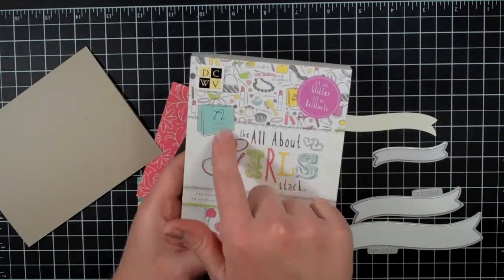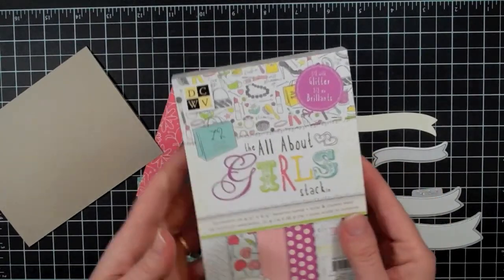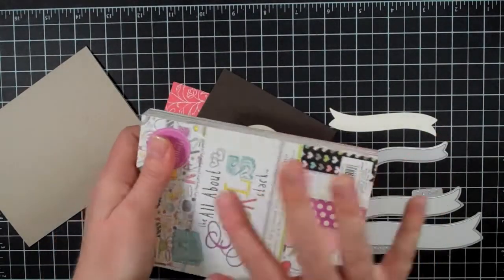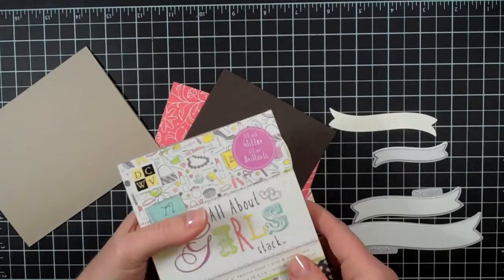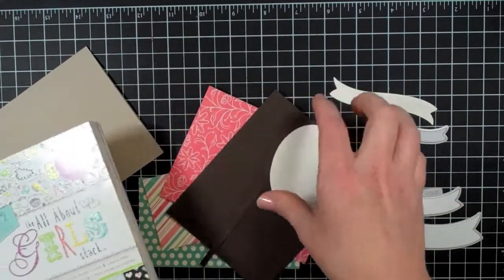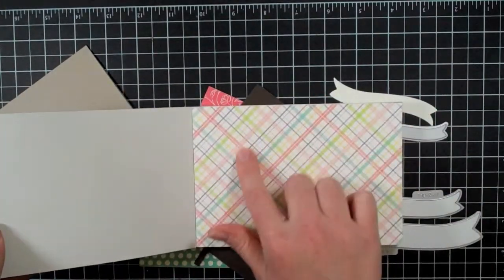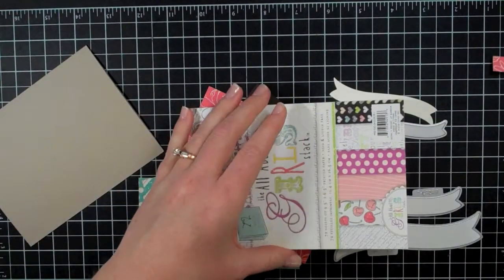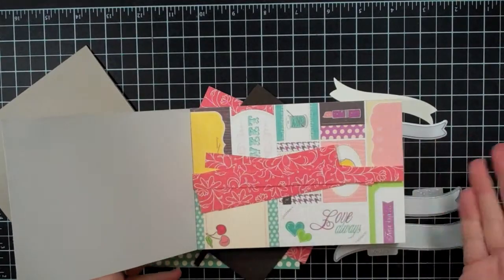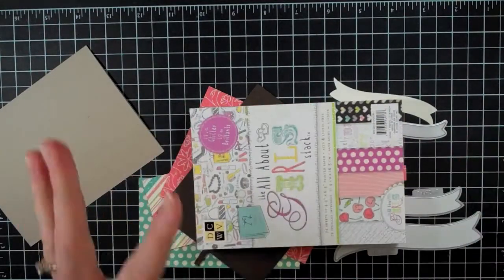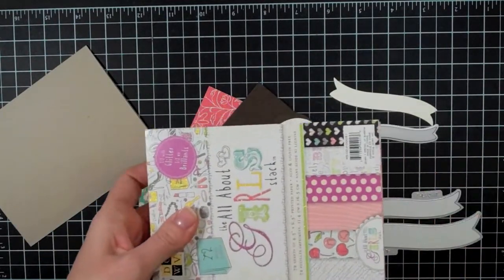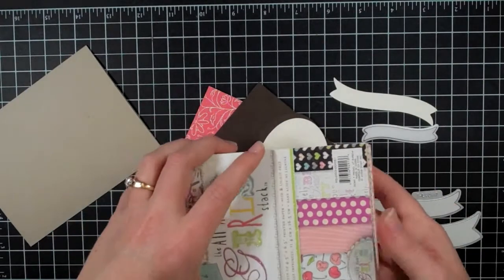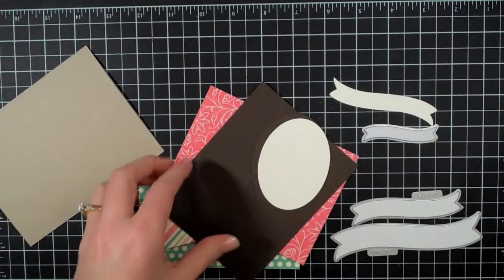I'm going to be using paper from this Die Cuts with a View. It's all about the girls, and this is just the mat stack. But the mat stacks are fine for card makers because you can cut this down for a card mat or cut elements out of it. And I keep my little scraps for stacks just kind of stuck in there and then I put it in my shelf. So there's an extra little tip for you.